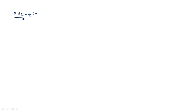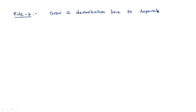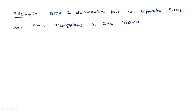Rule number four, the last rule: when you are drawing CMOS circuit diagrams, you should know the separate realizations of PMOS and NMOS. In order to separate the PMOS and NMOS realizations, we should use a line called the demarcation line. Draw a demarcation line to separate the PMOS and NMOS realizations in CMOS circuits. This demarcation line should be drawn only for CMOS circuits.